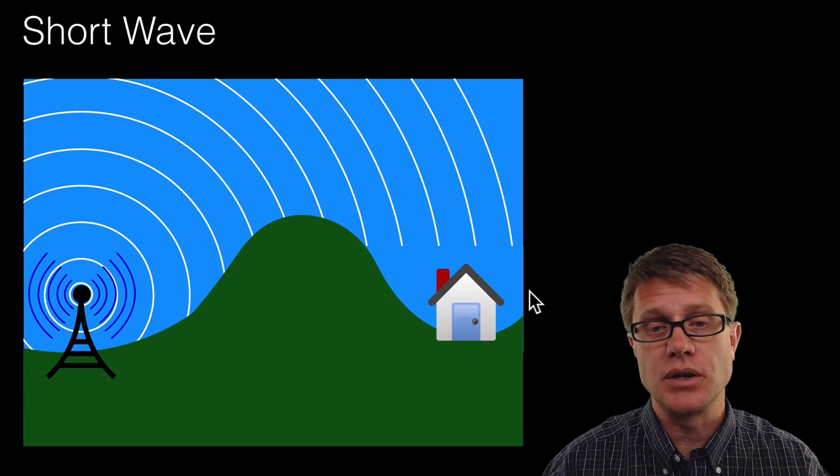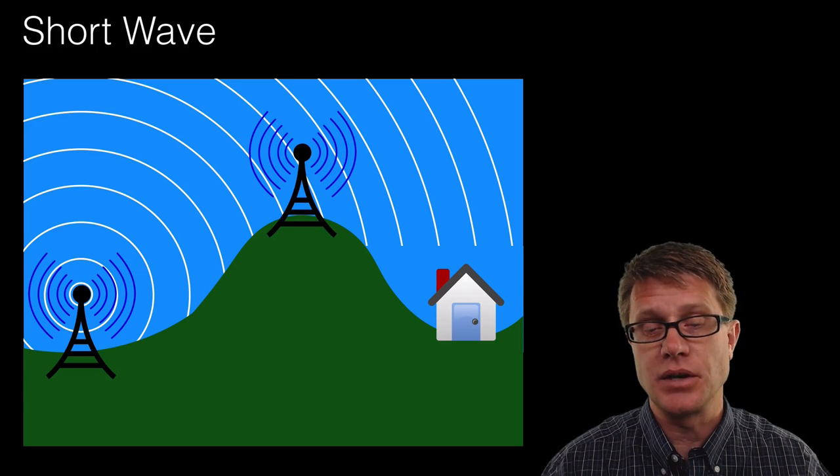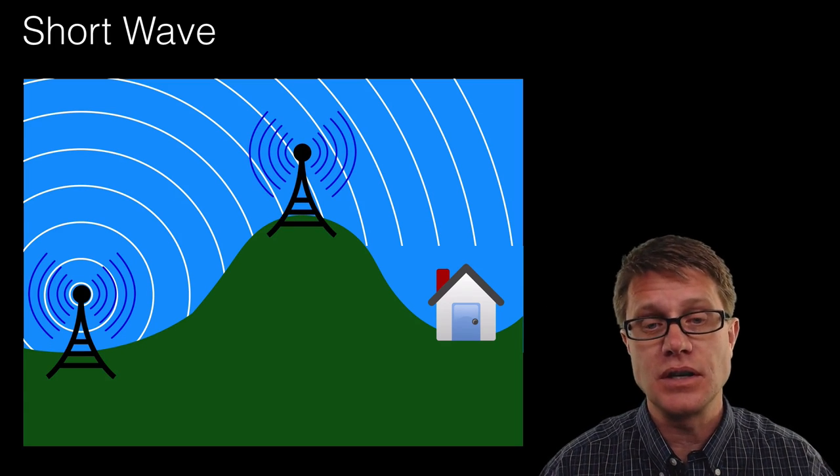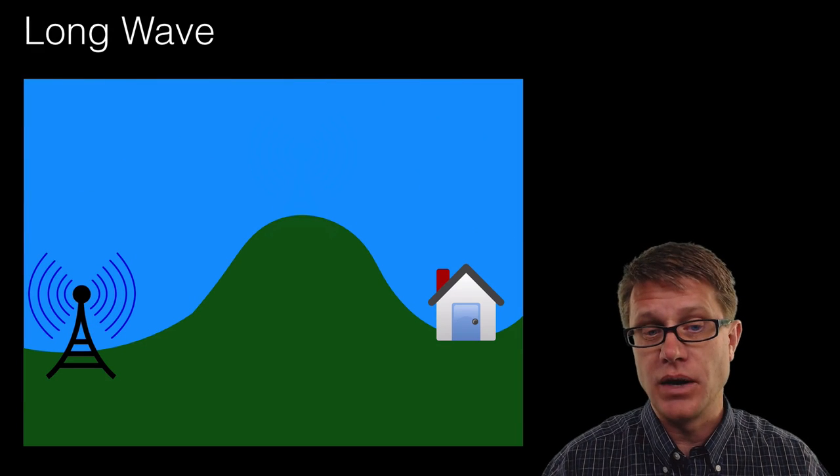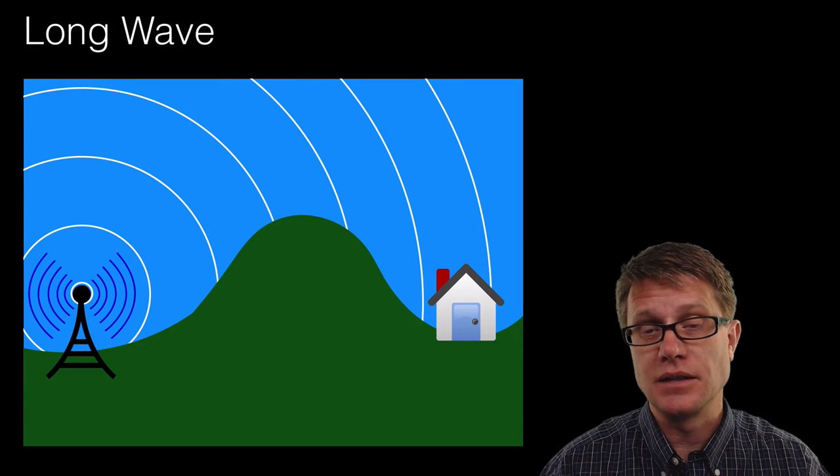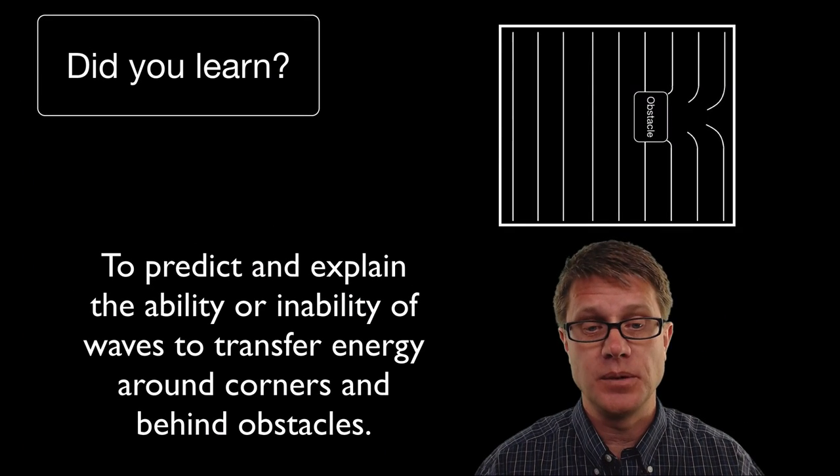So what would be a solution that we could have? Well we could put another relay up here so it could send you those signals. But if we are looking at long wave, long waves are going to be diffracted more readily. And so they are not going to experience that problem.